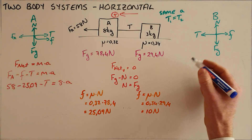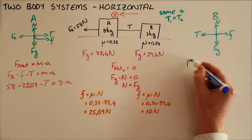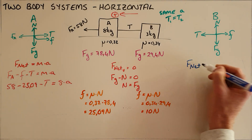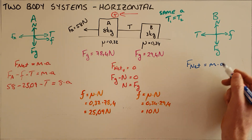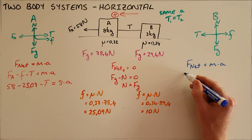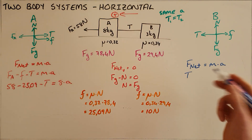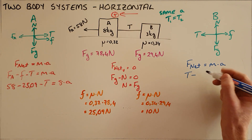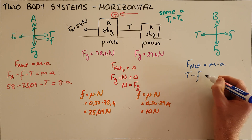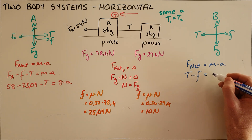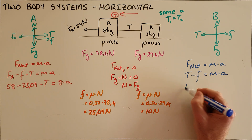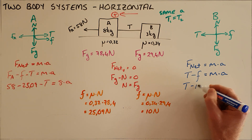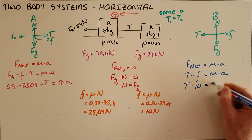We can do the same for the second object. There are fewer forces acting on it, but Newton's second law still applies: net force equals mass times acceleration. With left as positive, tension is the only force acting to the left, minus friction acting to the right, equal to this object's mass times its acceleration. Tension is unknown, friction is 10 Newtons, and the mass of object B is 3 kilograms.